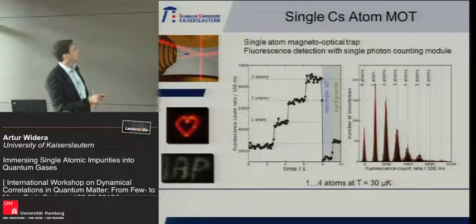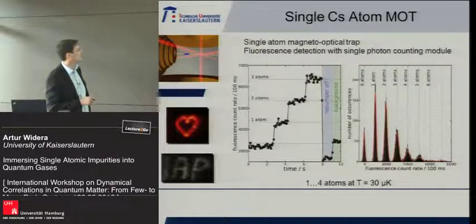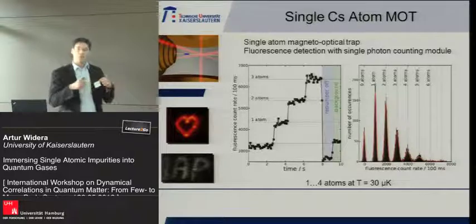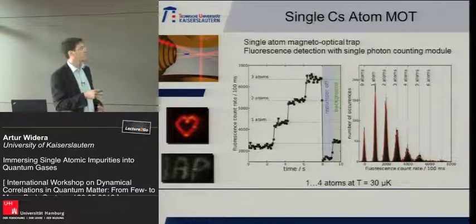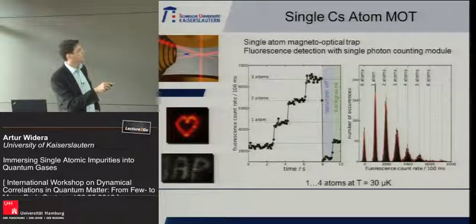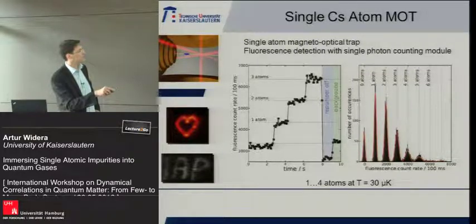Let me introduce the two subsystems. For the single-atom MOT: magneto-optical traps are standard, but if you make the MOT tighter and tighter, you enter a regime where the loading rate is extremely low. Looking at fluorescence versus time, we see discrete steps that we can assign to single atoms loading into the trap. A statistics histogram shows peaks for background, one atom, two, three, and four atoms.